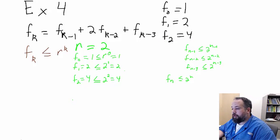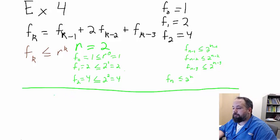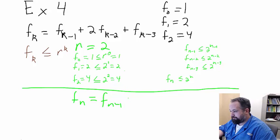Proving our inductive hypothesis, let me draw a line here to kind of separate these. We're going to say that f of n is equal to f of n minus 1 plus 2 times f of n minus 2 plus f of n minus 3, which is just our function definition.